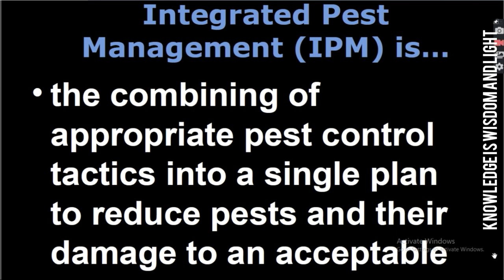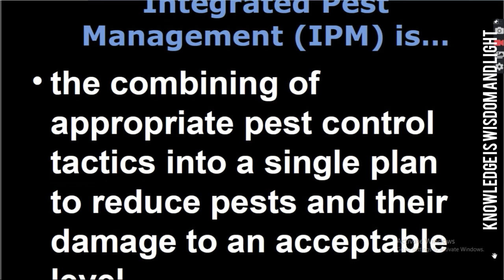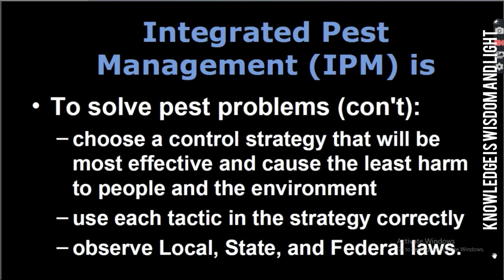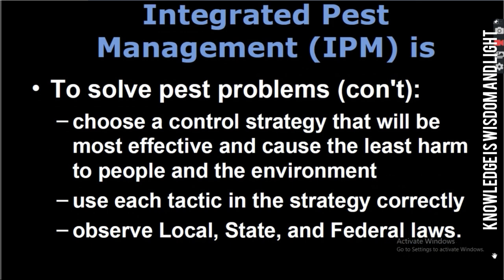Integrated pest management is the combining of appropriate pest control tactics into a single plan to reduce pests and their damage to an acceptable level. To solve pest problems, choose a control strategy that will be most effective and cause the least harm to people and the environment, use each tactic in the strategy correctly, and observe local, state, and federal laws.